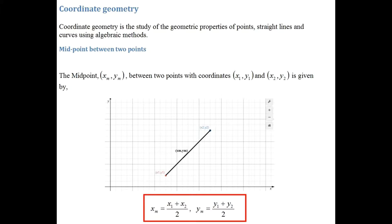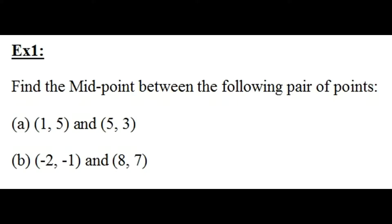So in this case, it's x1 plus x2 divided by two. And to work out the y coordinate of the midpoint, all we do is add the y coordinates, y1 plus y2, and divide by two. Let's see this in action with some examples and work out the midpoint between each of the following pair of points.